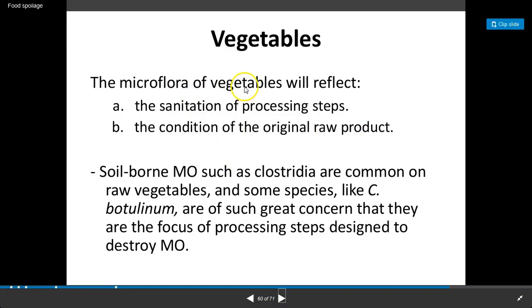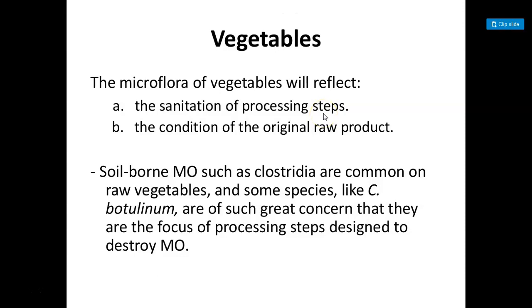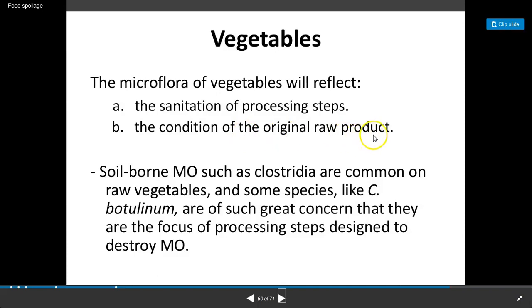The microflora of vegetables reflects the sanitation of processing steps and the condition of the original raw product. Soil-borne microorganisms such as Clostridia are most common on raw vegetables. Species such as Clostridium botulinum are of greater concern and should be the focus of processing steps designed for their destruction.